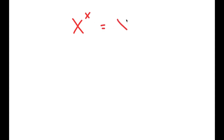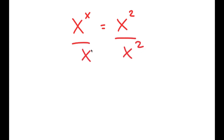In this video, I'm going to solve the equation x to the power of x is equal to x to the power of 2. To solve this, I'm going to first start by dividing both sides by x squared.